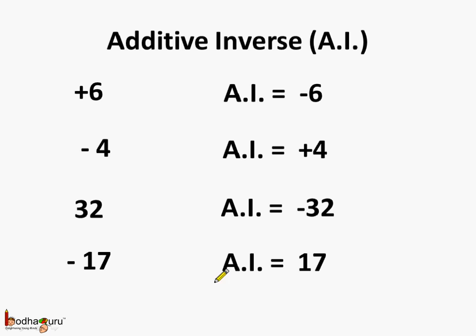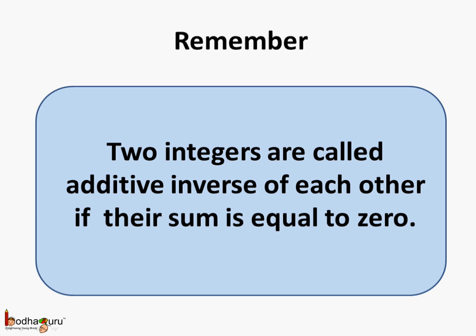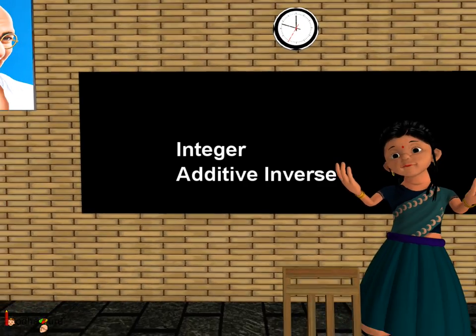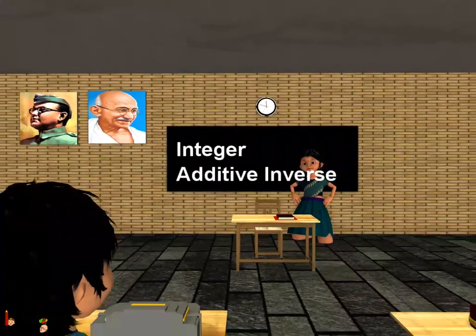Remember, additive inverses are opposite integers whose sum is always equal to 0. Two integers are called additive inverse of each other if their sum is equal to 0. Like we saw, minus 6 plus 6 is equal to 0. So now you know what is the additive inverse of an integer. That's all for now. Bye-bye children.